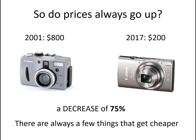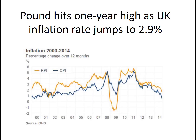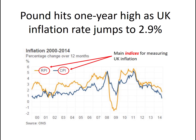Given this rather complicated picture of some prices going up and others going down, how do we end up with headlines like this? Inflation rate jumps to 2.9% — or indeed graphs like this one showing what's happened to inflation between the year 2000 and 2014. There is a clue on this graph. If you look at the key on the left-hand side, you will see the letters RPI and CPI. These are the two main indices that are used for measuring UK inflation.